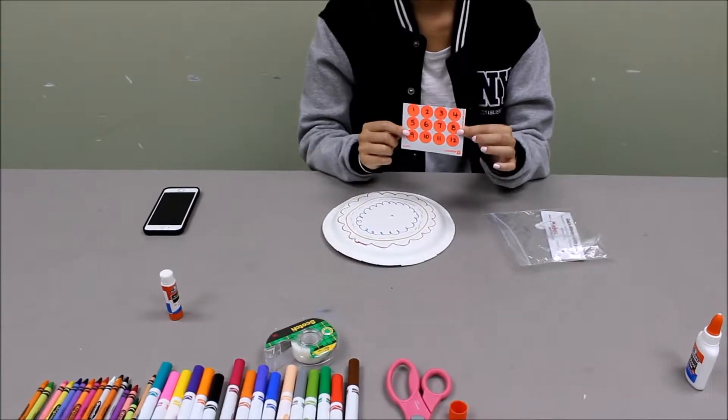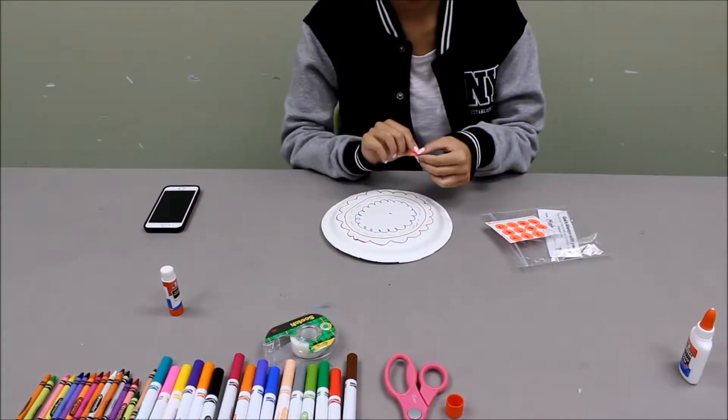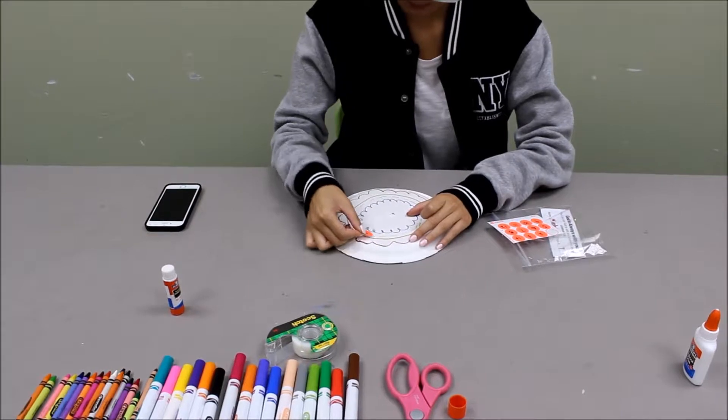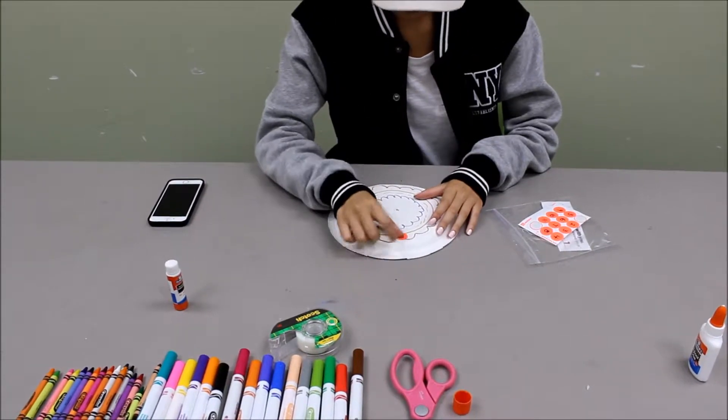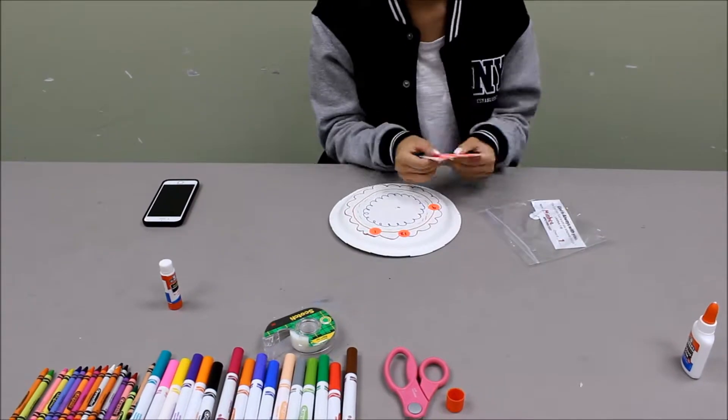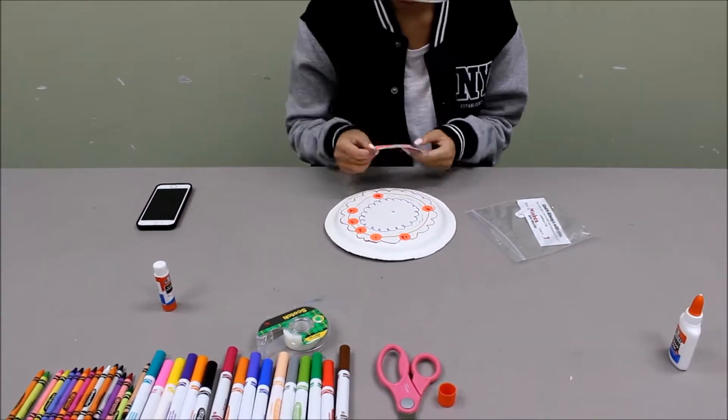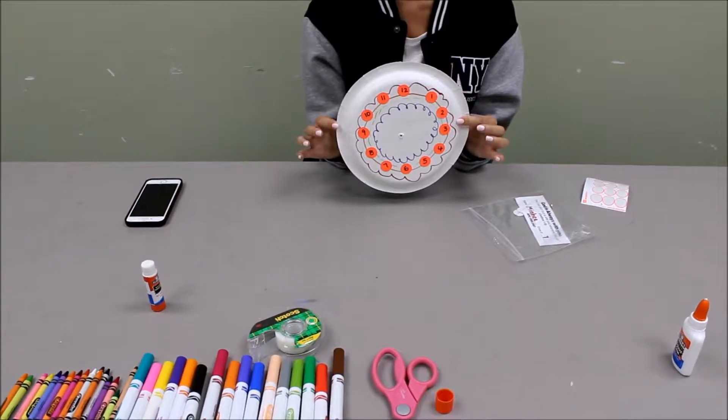Then students will take out the stickers, a number from 1 through 12, and they will stick it onto the plate accordingly. This should look like a clock, and if some students are having difficulties not knowing where to put the numbers in order, crew leaders and assistants can help them.